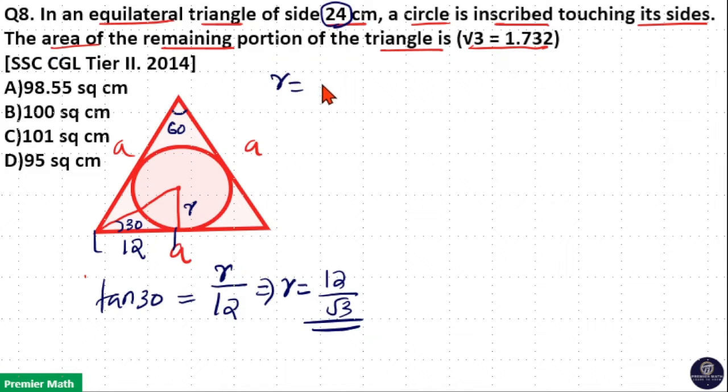Here, using the equation r equals a/(2√3), which means a is 24, 24/(2√3) equals 12/√3. So either you can find using the equation or you can find this way.